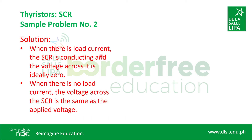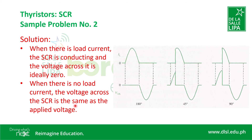When there is load current, the SCR is conducting and the voltage across it is ideally zero. When there is no load current, the voltage across the SCR is the same as the applied voltage. For 180 degrees conduction, the SCR should be triggered right away at any voltage from zero and above on the positive side. There will be a load current which increases as the voltage supply increases. At the negative part of the supply, the SCR will be turned off.